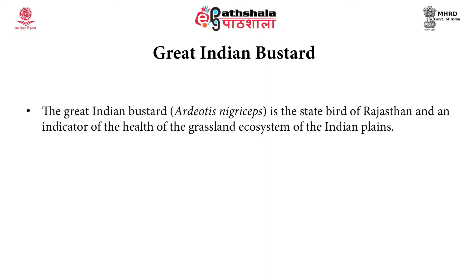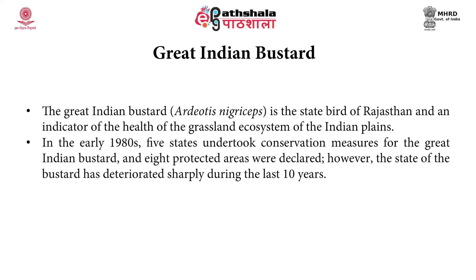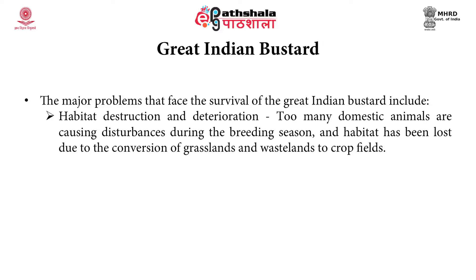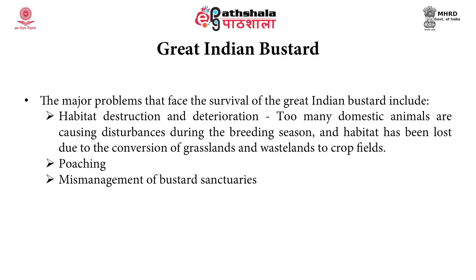The next is the Great Indian Bustard, scientifically called Ardeotis nigriceps. It is the state bird of Rajasthan and an indicator of the health of the grassland ecosystem of Indian plains. In the early 1980s, five states undertook conservation measures for the Great Indian Bustard and eight protected areas were created. However, the state of these bustards has deteriorated sharply in recent years. Major problems facing their survival include habitat destruction due to disturbance from domestic animals during the breeding season, loss of habitat due to conversion of grasslands and wastelands to crop fields, poaching in the desert areas of Rajasthan, and mismanagement of already created bustard sanctuaries.